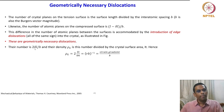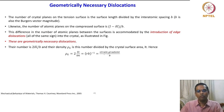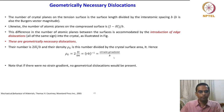Their number is 2·delta l / b, and their density rho_g is the number divided by the crystal surface area l·t. Hence rho_g = 2·delta l / (l·b·t), which is nothing but 1/(r·b). We can also relate this as equal to the strain gradient divided by b.